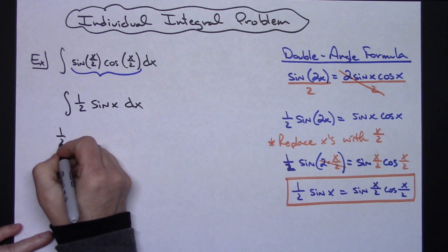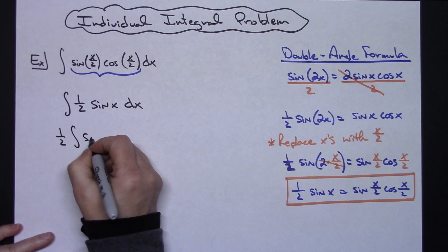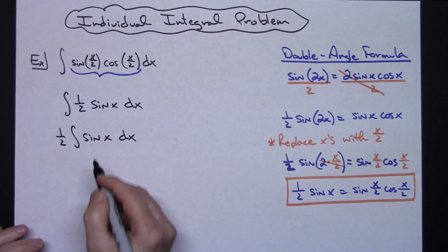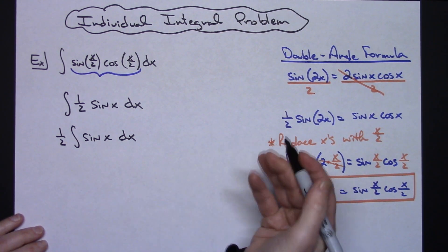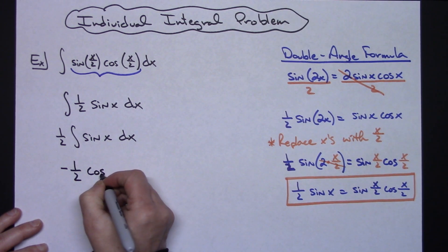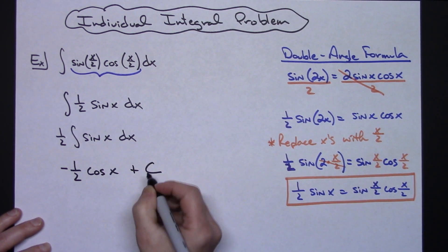We can pull that 1/2 out, and then I'm just integrating sin(x) dx. The integral of sin(x) is going to be negative cosine, so I'm going to have -(1/2)cos(x) + C.